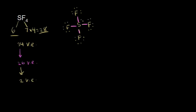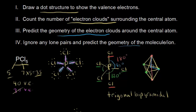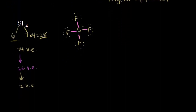Now we count the electron clouds surrounding the central sulfur atom. The bonding electrons to each fluorine are regions of electron density — each is one electron cloud. The lone pair of electrons on sulfur is also a region of electron density and counts as an electron cloud. So we have 5 electron clouds total, just like in the previous example, and those 5 electron clouds will adopt a trigonal bipyramidal shape.